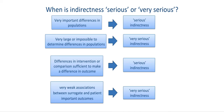When is indirectness serious or very serious? If there are very important differences in the populations, there may be serious indirectness. If it might be impossible to determine how large the differences in effects are, review authors may consider this very serious indirectness. If differences in the intervention or comparison are sufficient to make a difference in the outcome, there may be serious indirectness. A very weak association between a surrogate and a patient-important outcome may lead to the judgment of very serious indirectness. The importance here is placed on providing the rationale for these judgments in the footnotes of Summary of Findings tables.